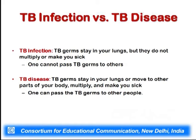There is a difference between tuberculosis infection and tuberculosis disease. In tuberculosis infection, the germs stay in the lungs only and do not multiply or make you sick — they do not transmit to other parts of the body and cannot be passed from person to person. In tuberculosis disease, the germs stay in the lungs but also move to other parts of the body, multiply, and make the newly infected person sick, passing from one person to another.